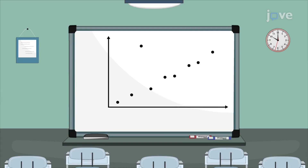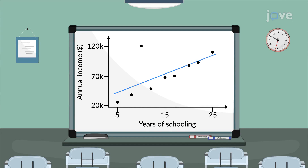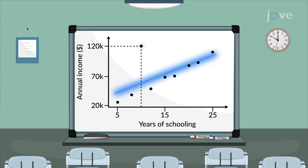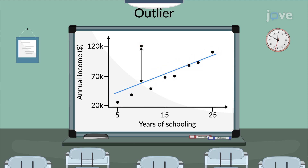Consider the scatterplot of annual income versus years of schooling, fitted with a regression line. One person with only a few years of schooling has an exceptionally high income compared to others. Such a data point that does not follow the trend and is far away from the regression line in the vertical direction is called an outlier.